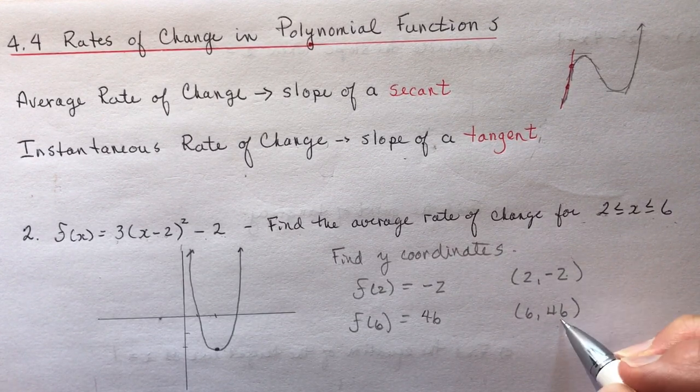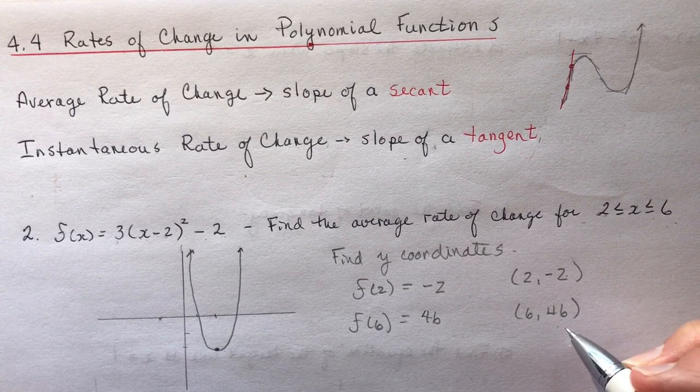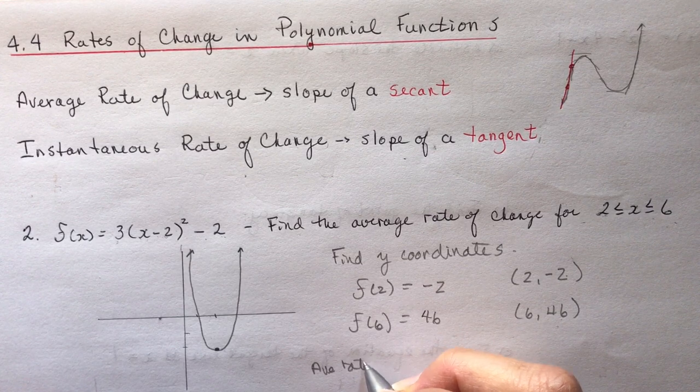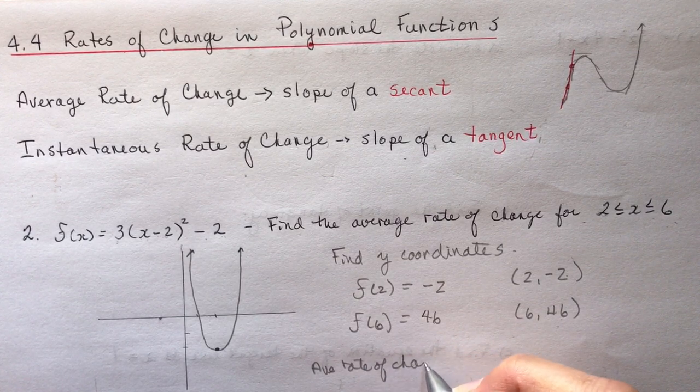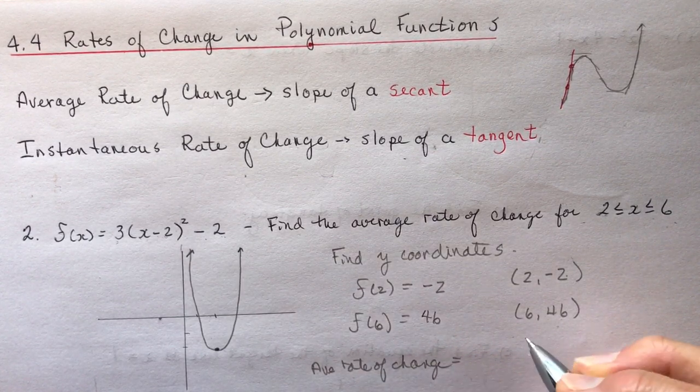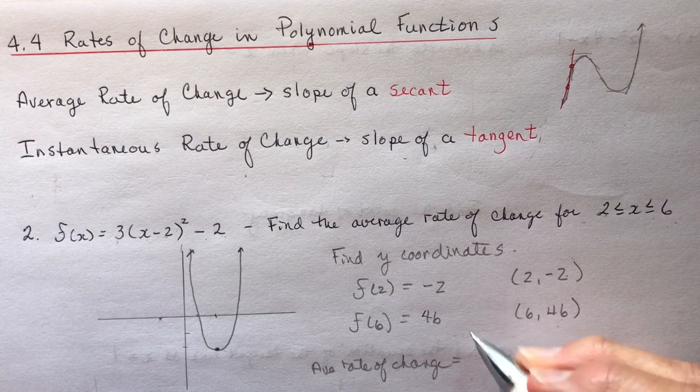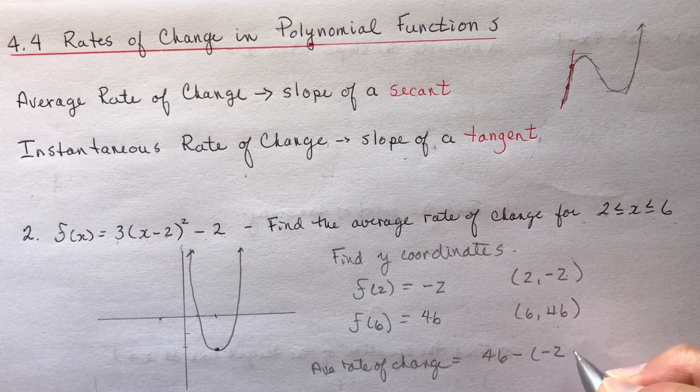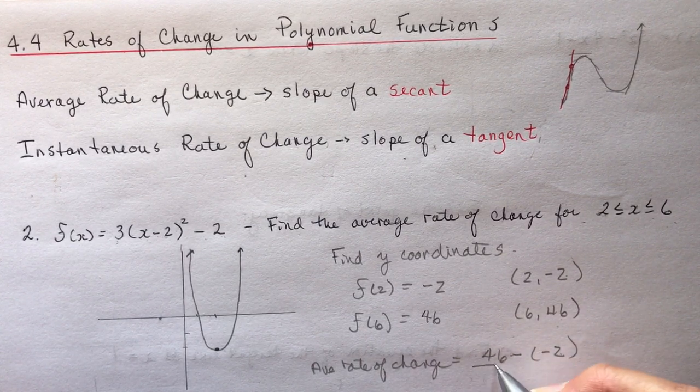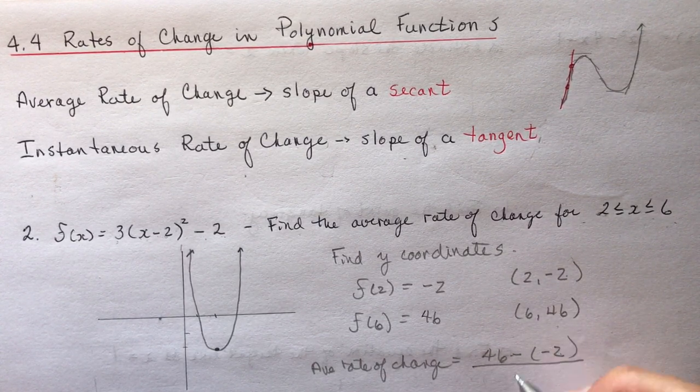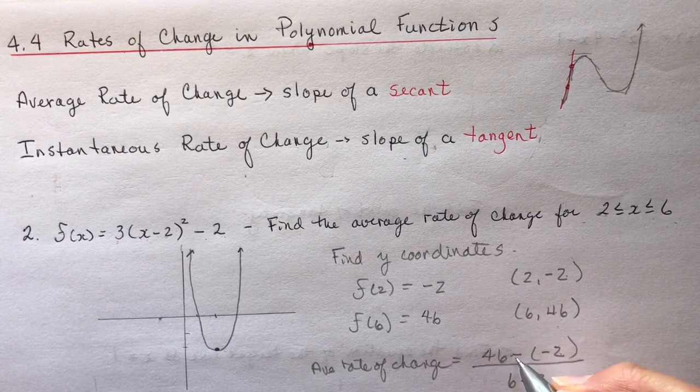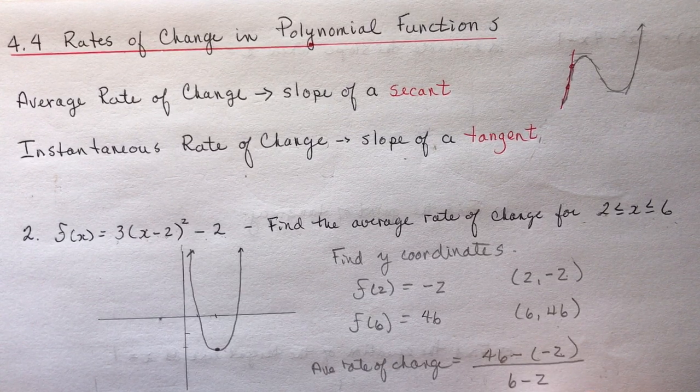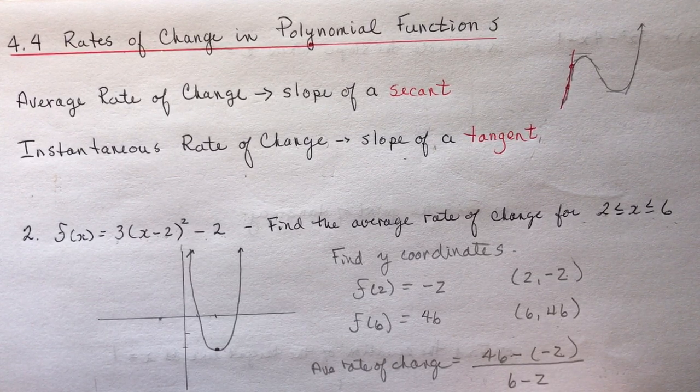So now that I have these two points, I can find the average rate of change. So I'm going to write average rate of change. It's going to be equal to the slope between these two points. So you can do it in any order you want. I'm going to do 46 minus minus 2. Don't forget the minus minuses or you'll get wrong numbers. Over 6 minus 2. 46 minus minus 2 is 48. Divided by 4 equals 12.